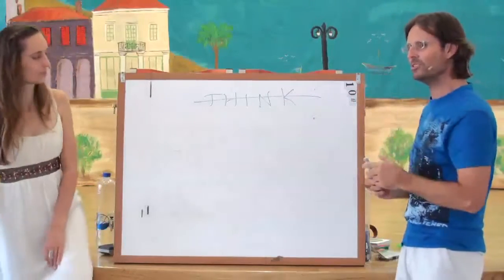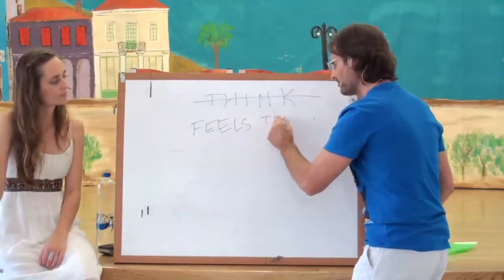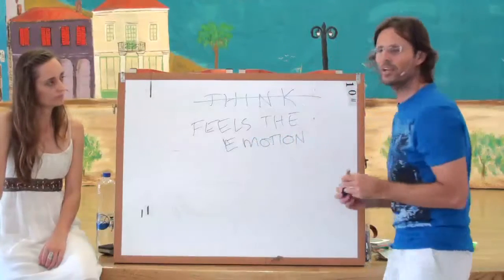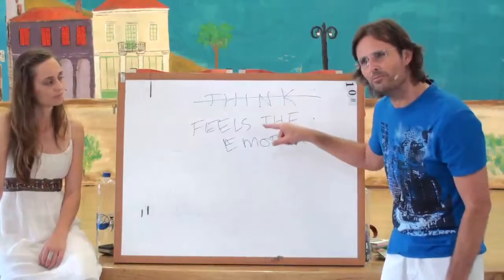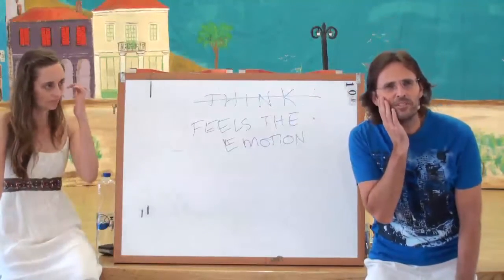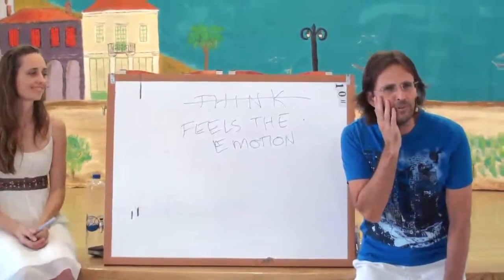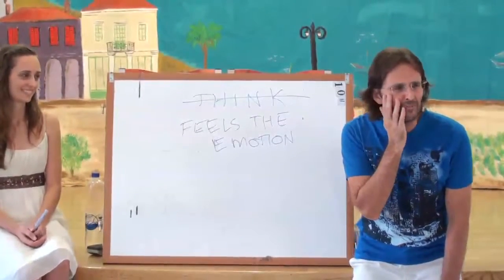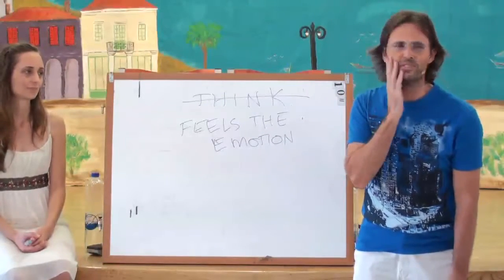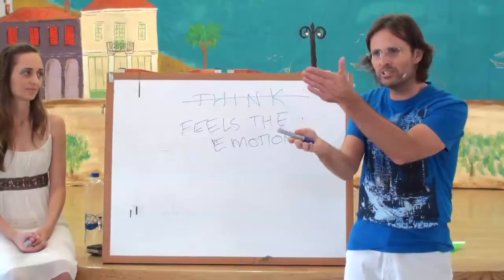Now, how does the child process emotion? It just feels the emotion. Nothing else. It doesn't actually do anything else other than feel the emotion. It doesn't try to work out where it came from. The child's not sitting there going: I'm feeling a bit sad at the moment — where did this sadness come from? Was it from my dad, or my mum, or two weeks ago when mummy smacked me? The child doesn't do that. It feels sad, it cries, and it doesn't have any delay between the sadness and the crying.